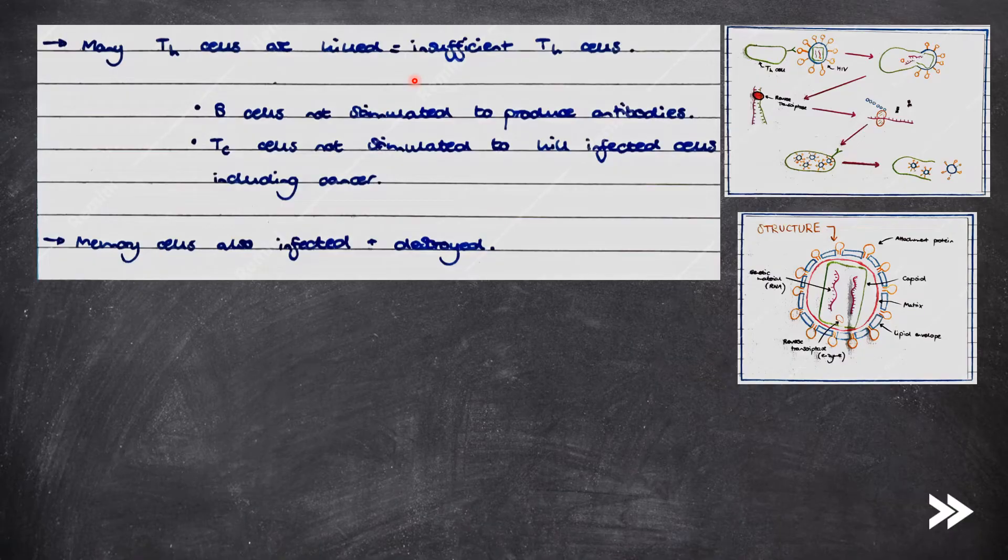Overall, this means that many T helper cells are killed, meaning that we have an insufficient number of T helper cells. This means that B cells are not stimulated to produce antibodies. Cytotoxic T cells are not stimulated to kill infected cells, including cancer cells. And memory cells are also infected and destroyed.